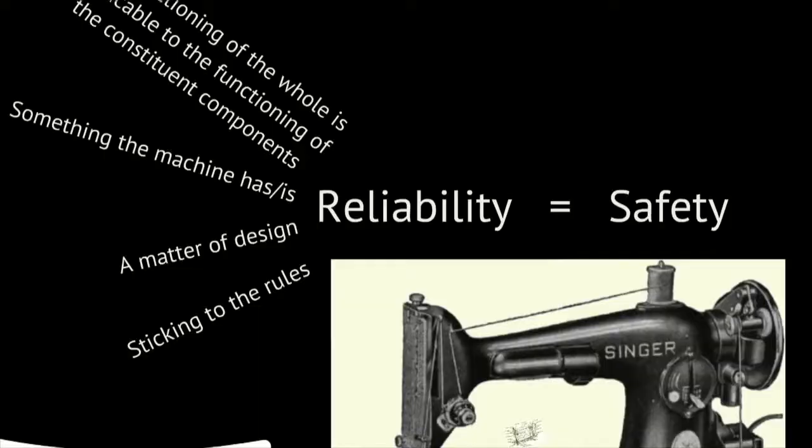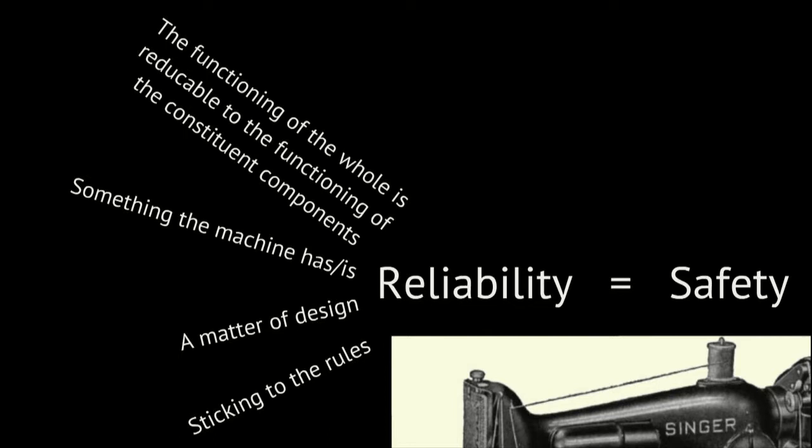Web operations is working reliably when all the individual components stick to the rules, which is pretty much a matter of designing the proper rules for them to stick to. Reliability then becomes something that the machine of web operations has or is — it is reliable per design. The reductionist principle follows that the functioning of the whole can be reduced to the functioning of the constituent components; essentially, if the machine of web operations is not working, there needs to be an individual component which is not working.